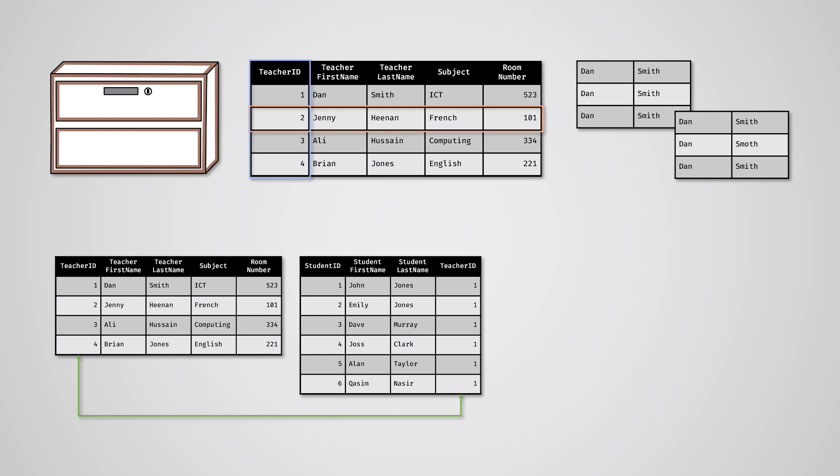When you have tables linked in this way, it is called a relationship. Relationships can be one-to-one, one-to-many, or many-to-many.